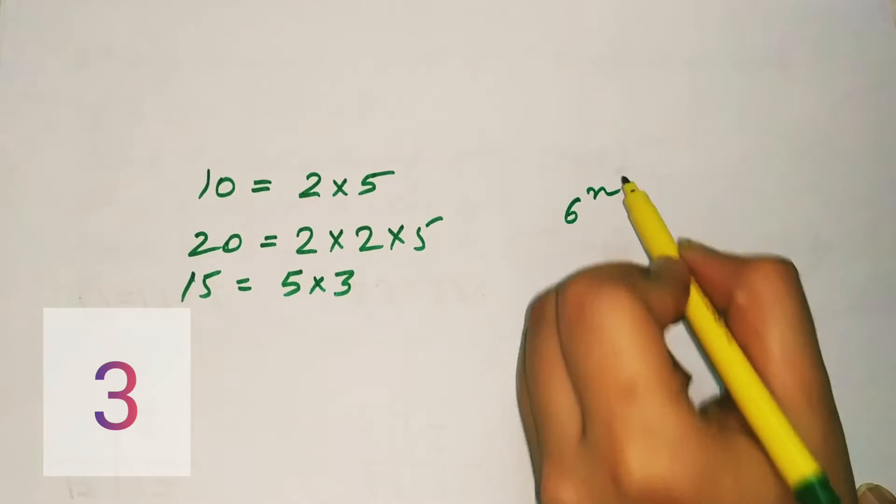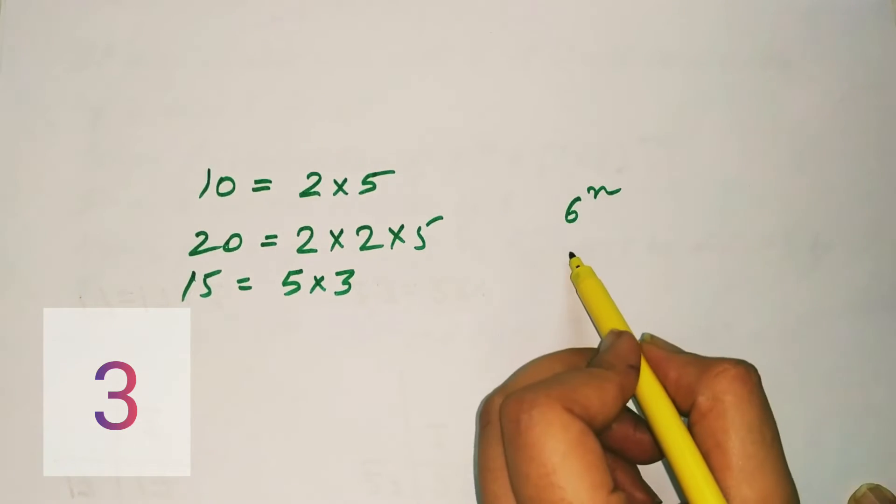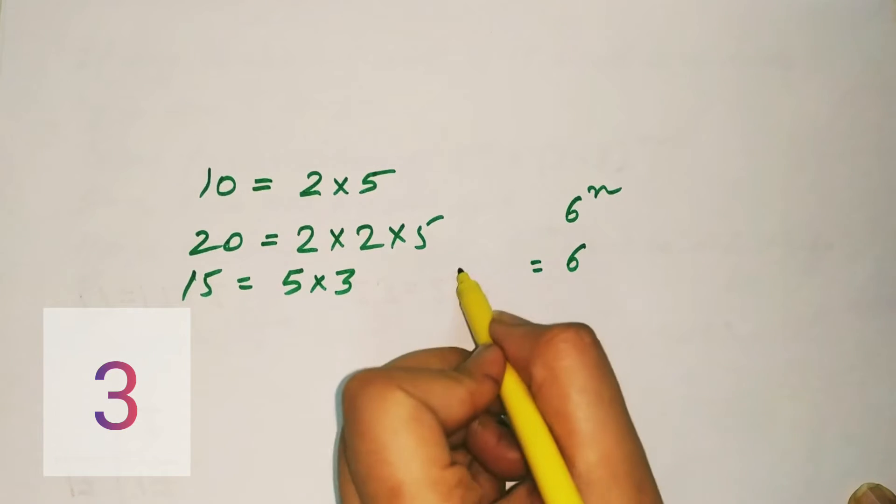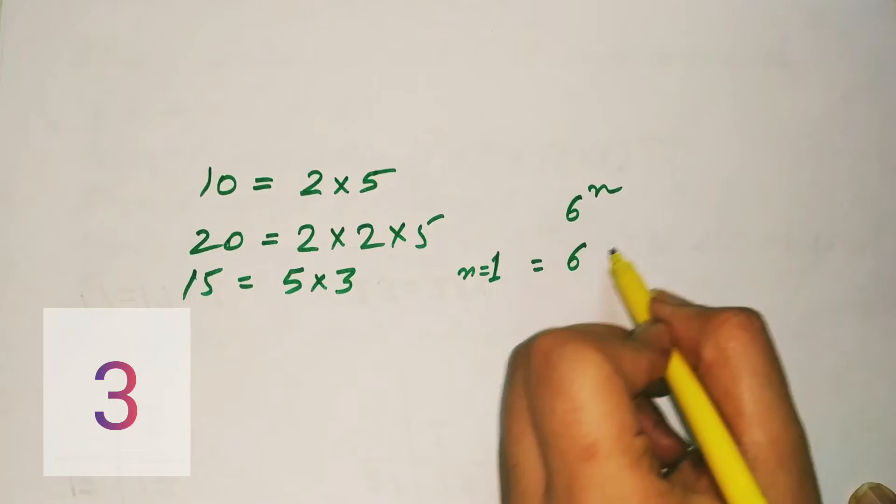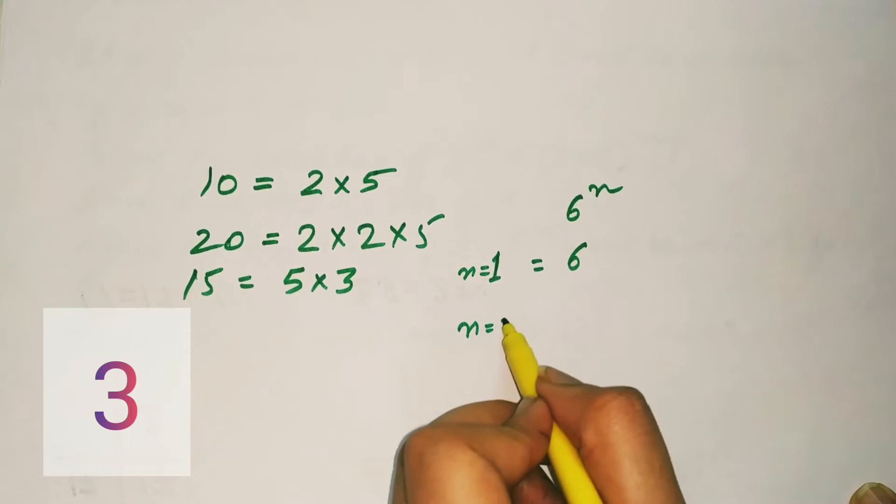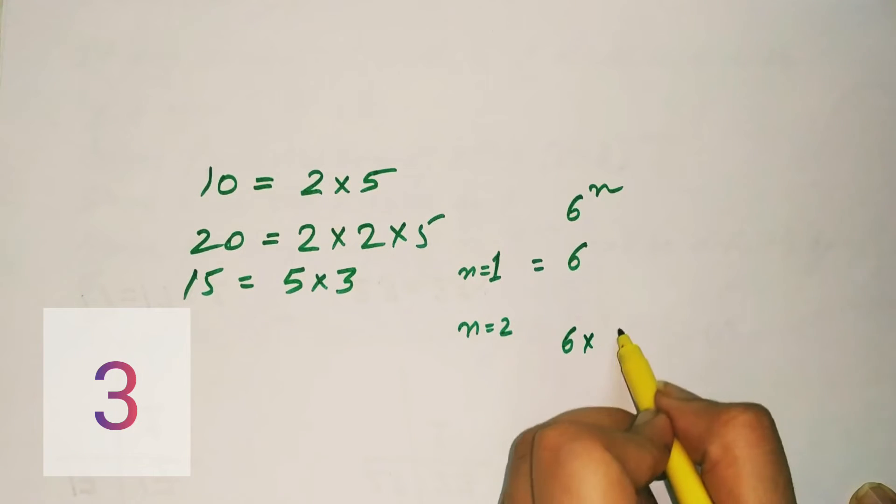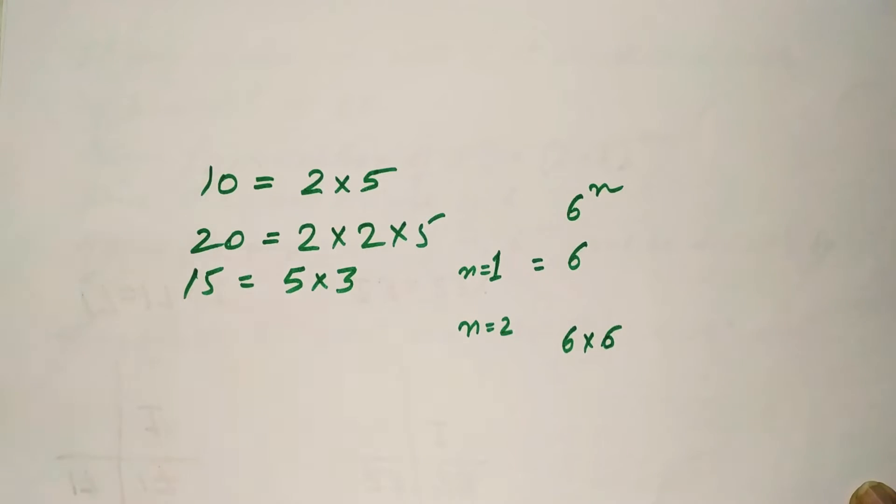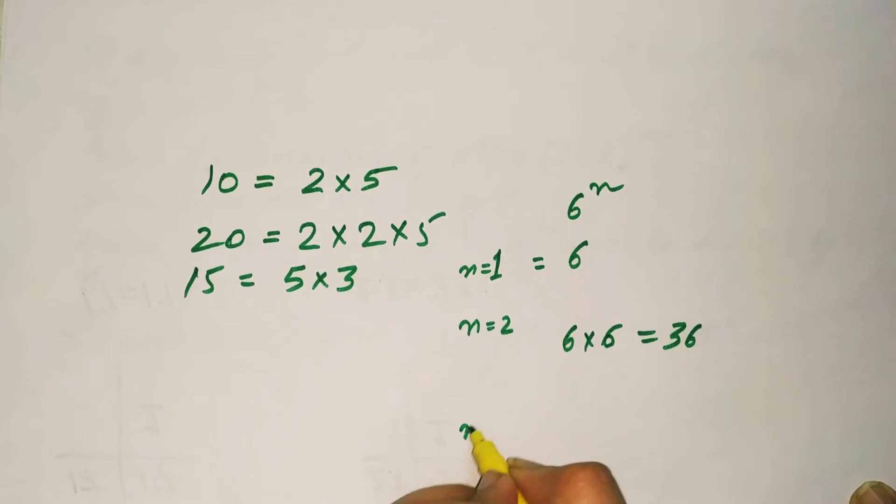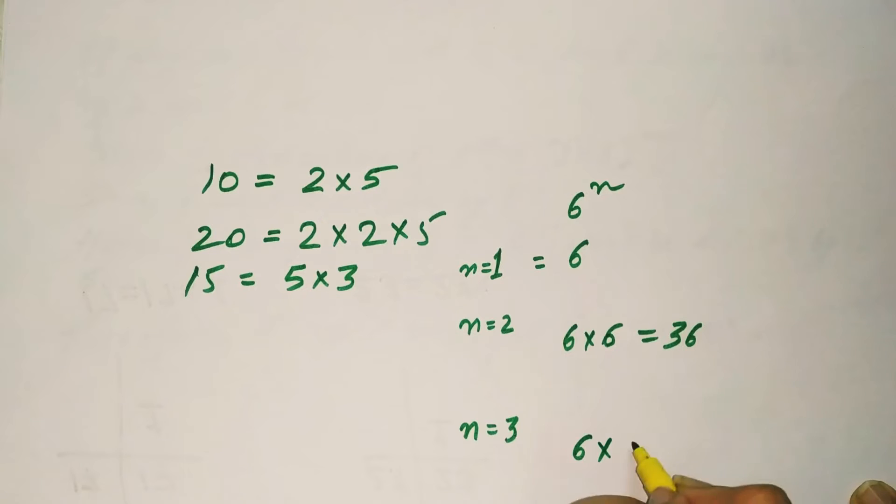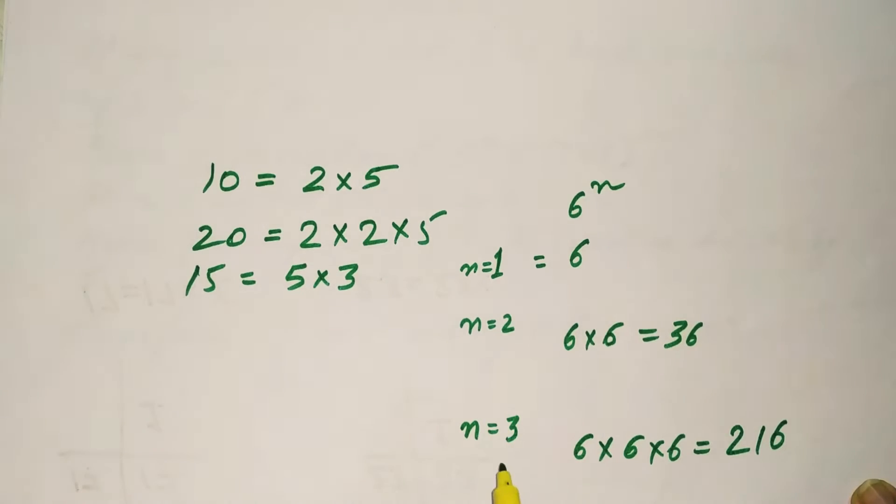6 raised to the power n. Now substitute n as 1. When n is equal to 1, 6 will be 6. When n is equal to 2, 6n would be 6 raised to the power 2 will be 6 multiplied by 6 which is equal to 36. Similarly, n is equal to 3 will be equal to 6 multiplied by 6 multiplied by 6 is equal to 216.